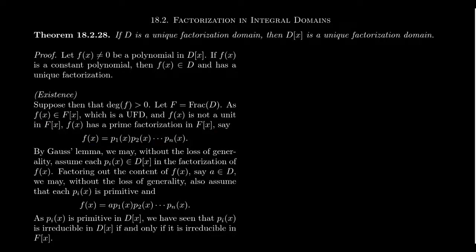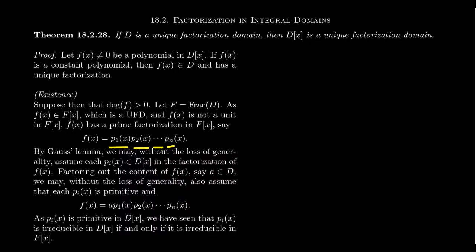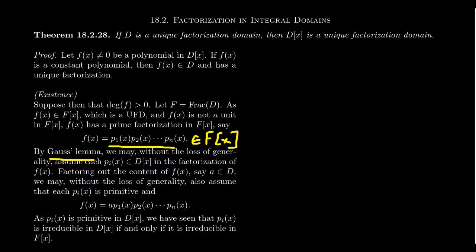So let's say F can be factored as P₁(X) · P₂(X) · P₃(X) · … · Pₙ(X), where each of these polynomials is irreducible in F adjoin X. This is where Gauss's lemma comes into play: if we have a factorization of F over the fraction field, then without loss of generality we can suppose that each polynomial Pᵢ is actually a polynomial inside D[X]. They might not necessarily be irreducible over D[X] as they were over F[X] — we could factor out their content.